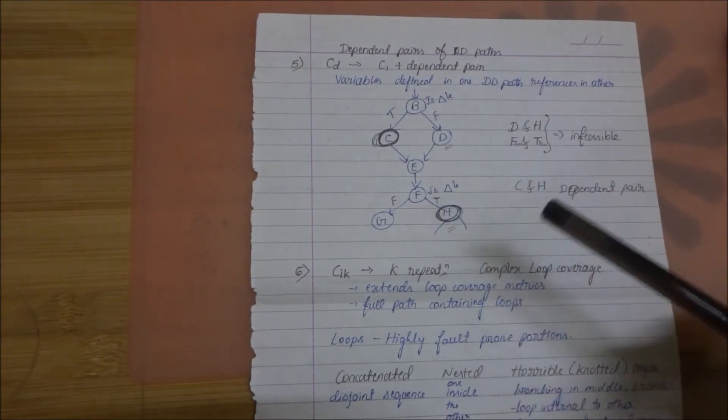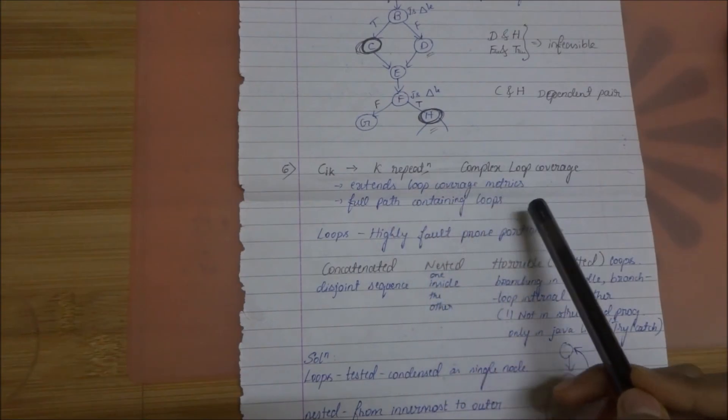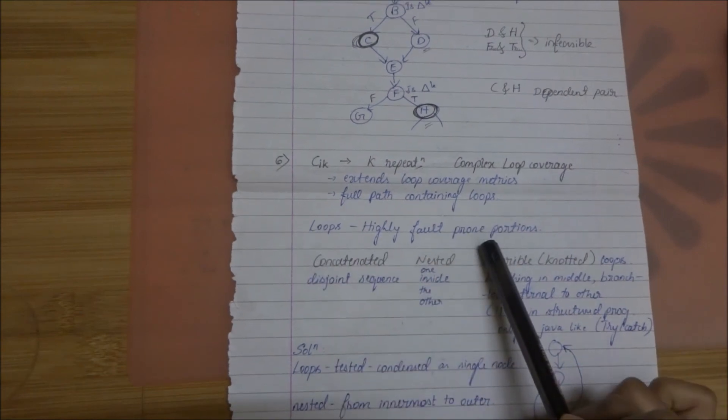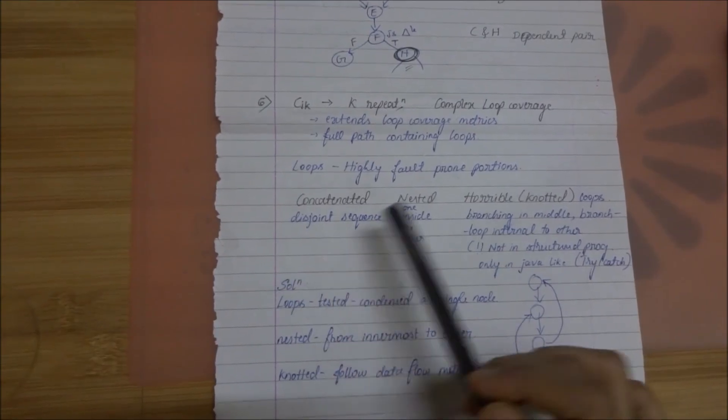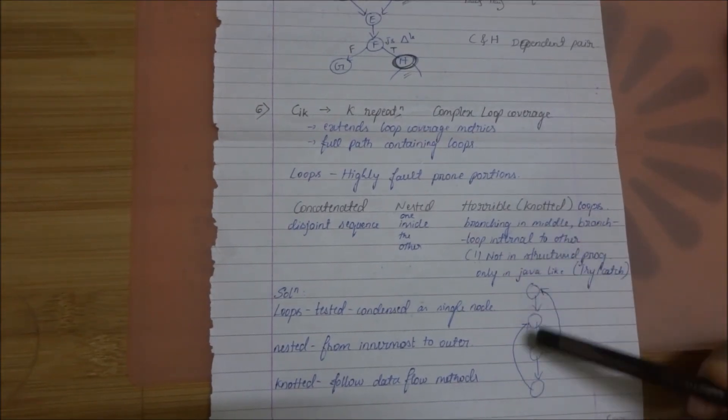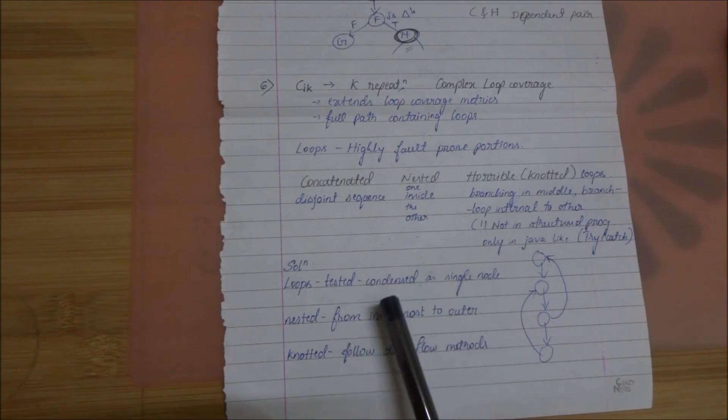One is false over here and other is true. Next one is CIK. This represents complex loop coverage. This is an extension of loop coverage matrix but it is the full path containing loops. Loops are highly fault prone portions. In complex loop there are three categories. One is concatenated or disjoint sequence. Second one is nested, one loop inside the other. The third one is horrible or knotted loops. Here the branching is so complicated that it looks as though it's knotted. The ones that are worth mentioning are condensing the loop as a single node. The next one is nested. Traversal can be started from the innermost to the outer ones. If they are knotted then certain data flow methods have to be carried out because they do not appear in the structured programming languages.